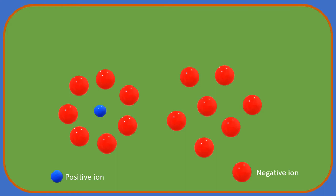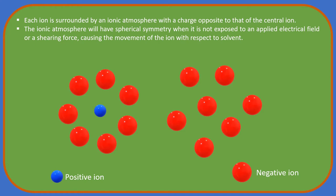Here we assume that each ion is surrounded by an ionic atmosphere with a charge opposite to that of the central ion. The ionic atmosphere will have a spherical symmetry. The spherical symmetry occurs only if the ion is not exposed to an applied electrical field or a shearing force causing movement of the ions. The symmetry of the ionic atmosphere will be disturbed if we apply an electric field.